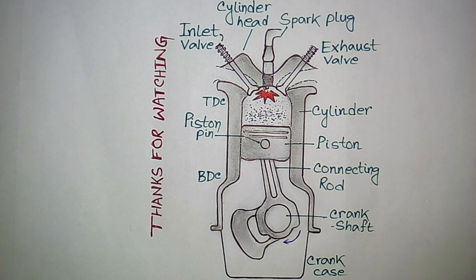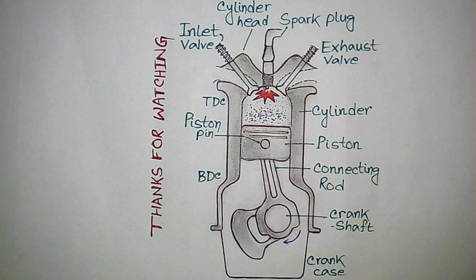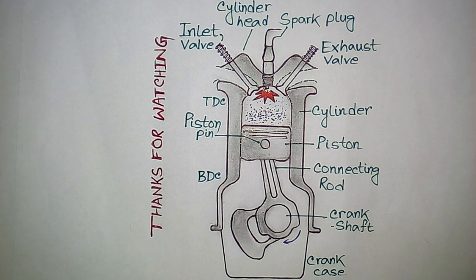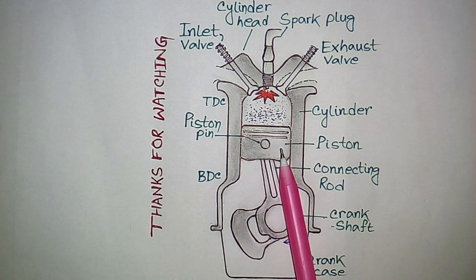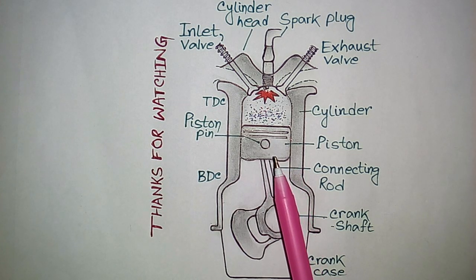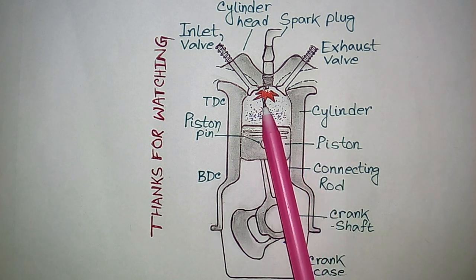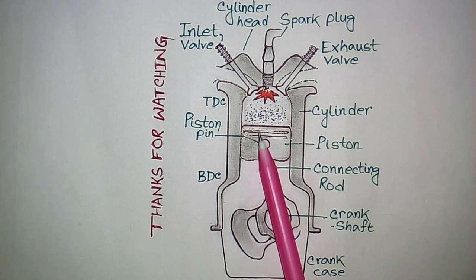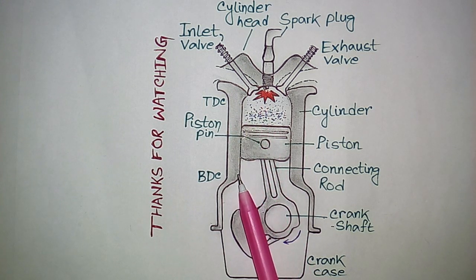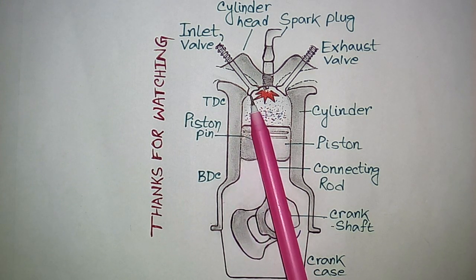The main part of an IC engine is the piston — it is also called the heart of the engine. It reciprocates inside the cylinder and creates mechanical energy from the chemical energy of fuel, and transfers the power to the connecting rod. This piston reciprocates inside the cylinder up and down, from TDC to BDC or from BDC to TDC.